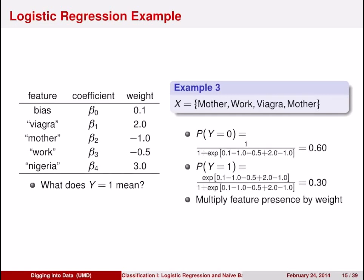Now let's take a look at a more complicated example. Say you have a document with the words 'mother,' 'work,' 'Viagra,' and again the word 'mother.' You start with the bias value 0.1, then add minus 1 for 'mother,' minus 0.5 for 'work,' plus 2 for 'Viagra,' and minus 1 again for 'mother.' If you have multiple appearances of a word, you multiply the coefficient for that word by the number of times you see it. Plugging these into the equation, we get the probability of it being spam of 0.3, and the probability of it not being spam, 0.6 (should be ~0.7).